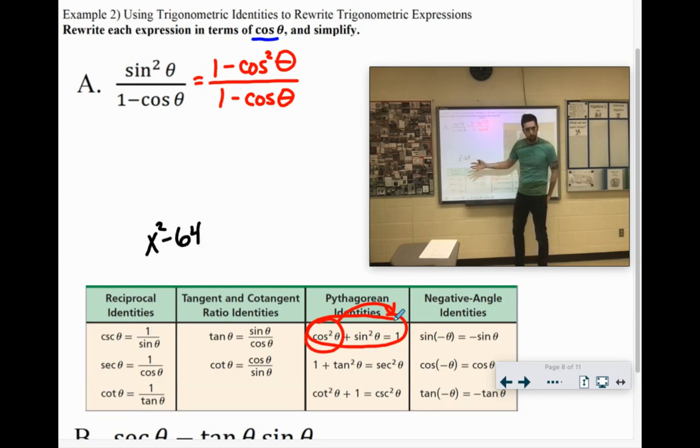If you had like x squared minus 64, those are two things that you could square root. So it was the difference of squares. So the way you'd factor that is you'd square root each one, put one with a plus, one with a minus. Square root of x squared is x. Square root of 64 is 8. So you'd say x plus 8 times x minus 8.